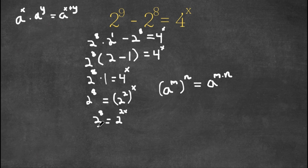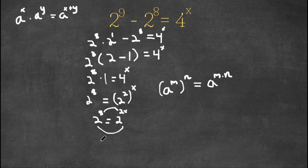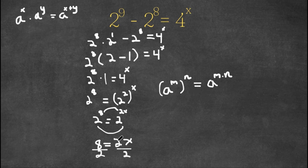Now, because we have the same bases, that must mean our exponents must be the same as well, because this equation would not be true if these exponents are different. That means 8 equals 2x. As you can see, we have a simple equation, and we just want to solve for x. So if we divide by 2 on both sides, these cancel out, and we get 8 divided by 2 equals x, and 8 divided by 2 is 4. So x equals 4.